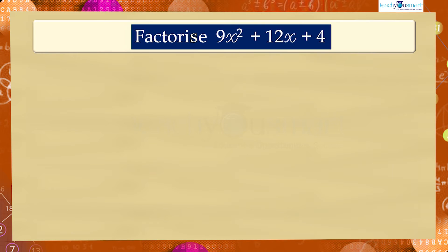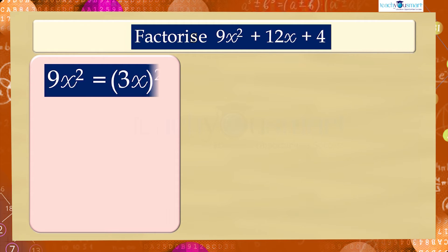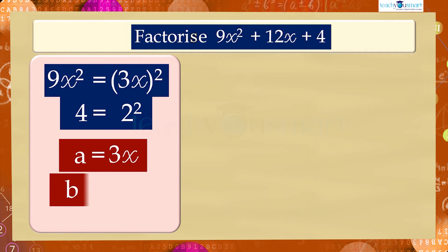For that, we can write 9x² as (3x)² and 4 as 2². That is, a = 3x and b = 2. Now we have to check whether the middle term can be expressed in terms of a and b.